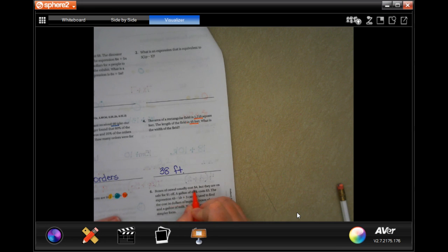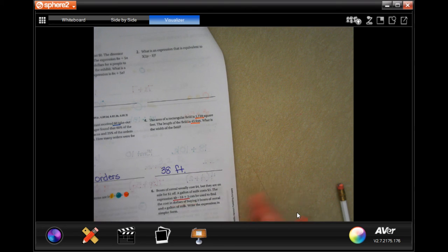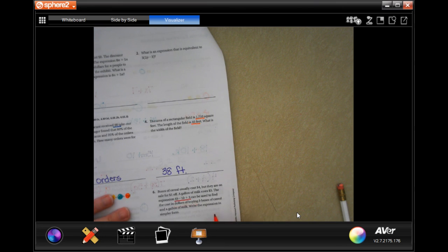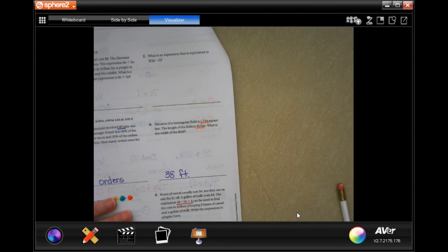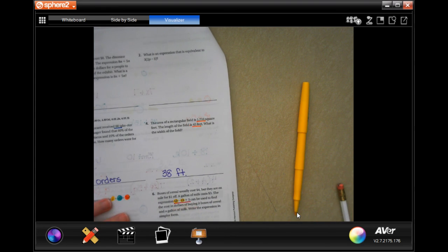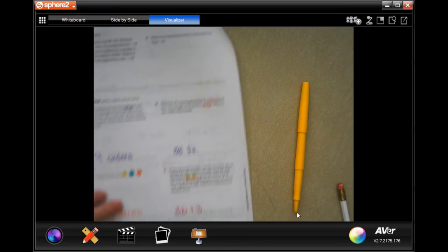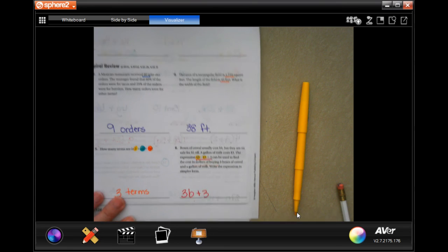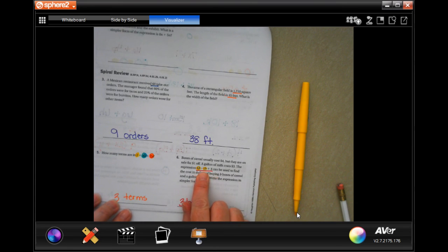So, boxes of cereal usually cost $4, but they are on sale for $1 off. A gallon of milk costs $3. The expression 4B minus 1B plus 3 can be used to find the cost in dollars of buying B boxes, however many boxes of cereal, and a gallon of milk. Write the expression in simpler form. So, we're going to combine our like terms. So, I'm going to go for the 4B and the 1B, and 4B minus 1B is 3B, and I'm still adding that 3. Sorry, guys. I didn't see that. All I did was go through, highlighted my like terms, combined them, and kept the other one.